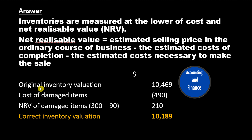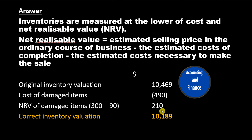Original inventory valuation: $10,469. Less cost of damaged items: $490. NRV of damaged items: $300 minus $90 = $210. Correct inventory valuation: $10,189.